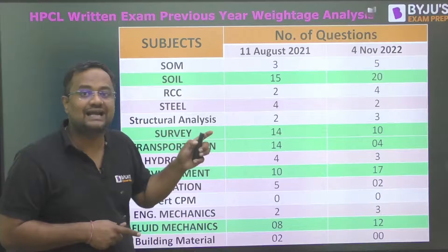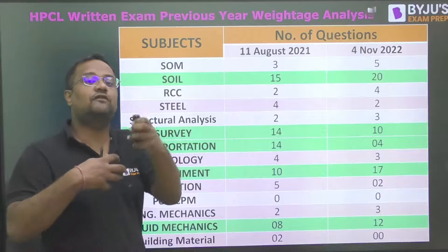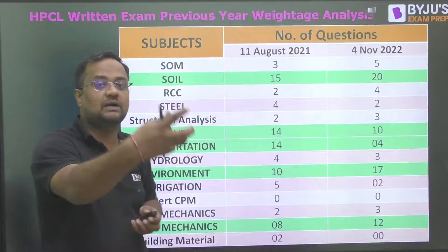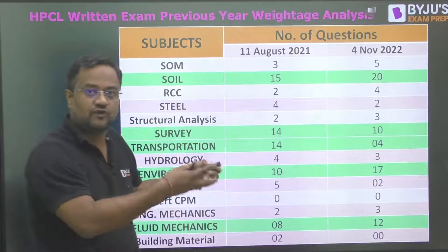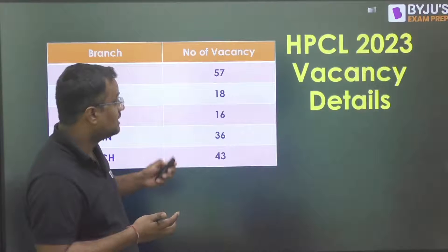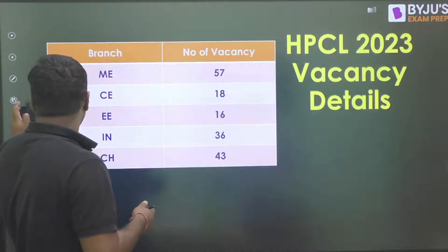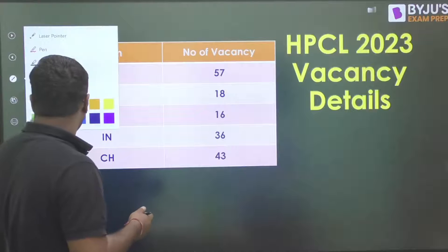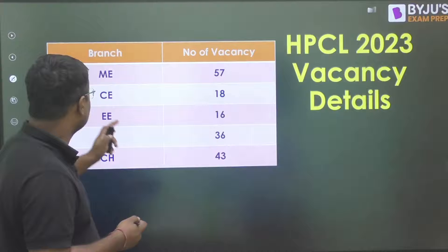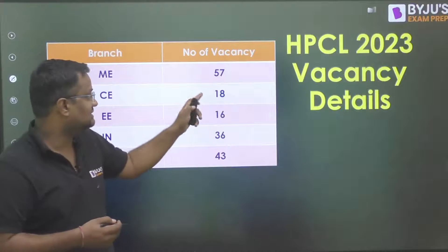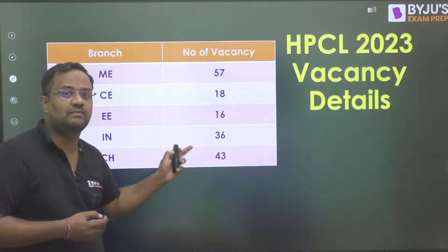I manually took the last two-year papers — 4th November 2022 and 11th August 2021 — for civil engineers, and manually counted the weightage of civil. You can see that and refer to it for your upcoming HPCL exams. For the 2023 sprint, the number of vacancies for civil is 18.